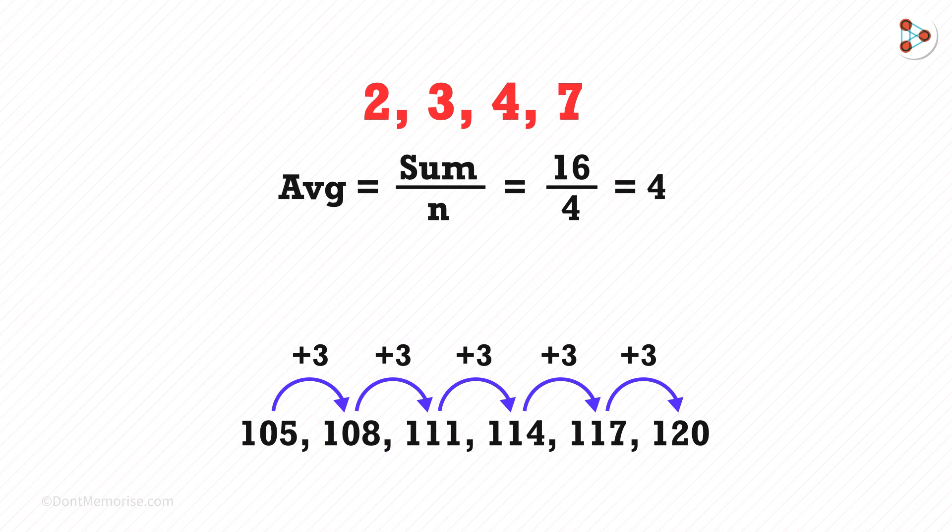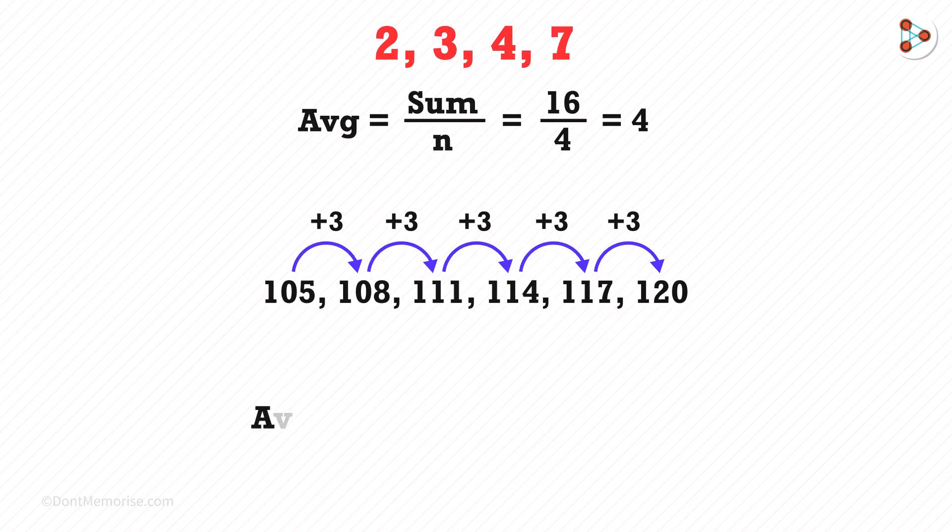There is an easy method to solve this. For evenly spaced numbers the average is the first term plus the last term divided by 2.